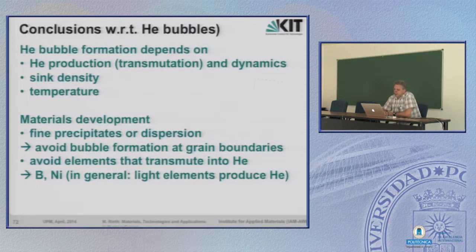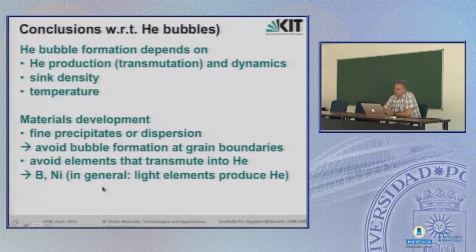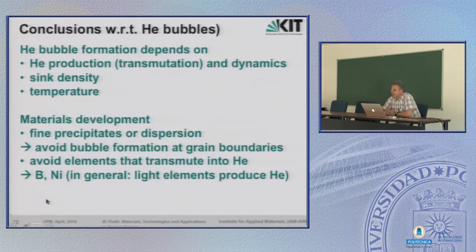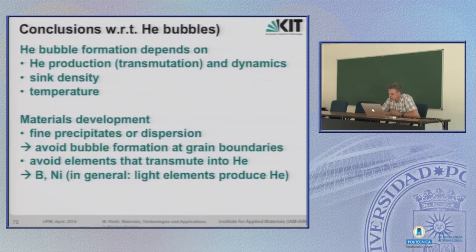In conclusion: since you cannot avoid helium transmutation, and light elements which produce helium are unavoidable in most engineering materials, we generally have to live with helium bubble formation. There seems to be a natural limit of a few hundred appm helium, after which future fusion reactors would need to be shut down. ODS steels with fine oxide dispersoids offer some mitigation. That concludes irradiation damage.